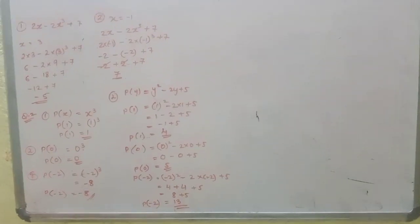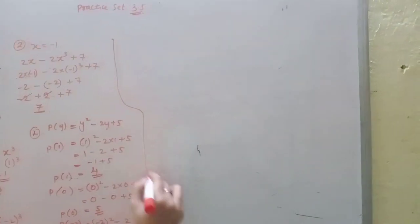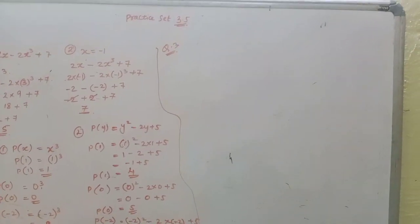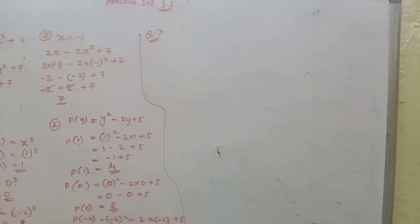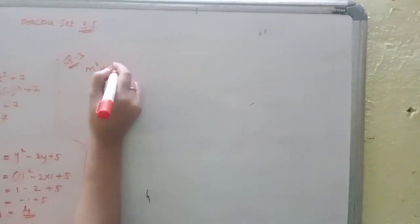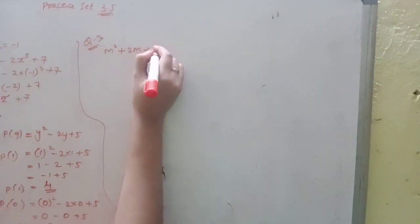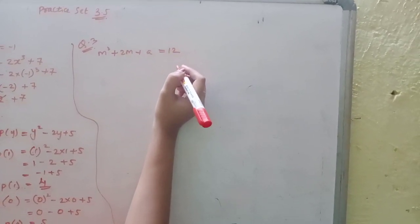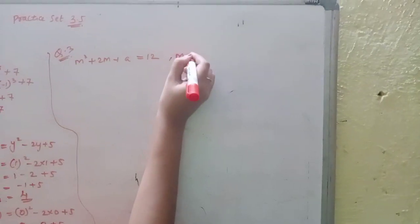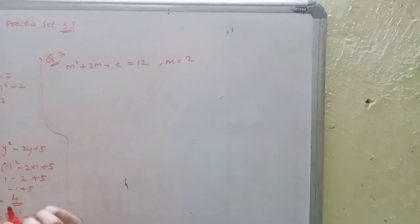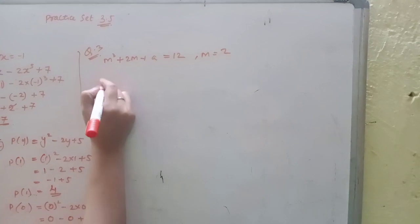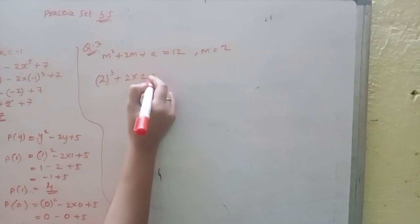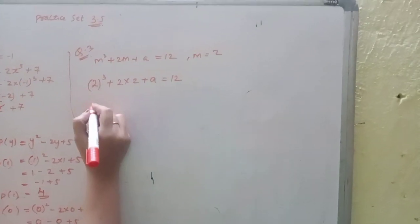Third question: If the value of polynomial m³ + 2m + a equals 12 for m = 2, find a. We have to find out a. M ke jagah pe 2 rakhenge.